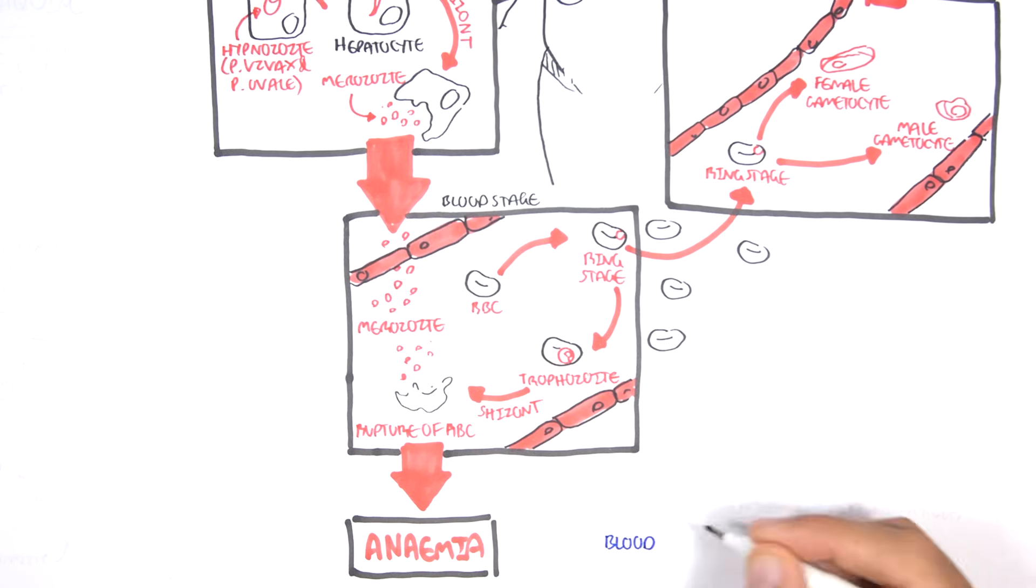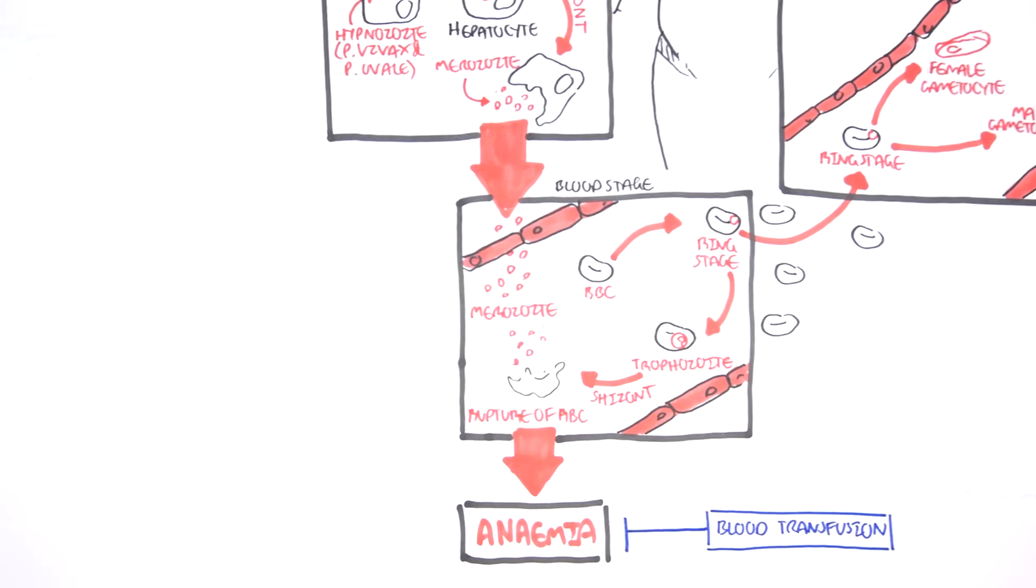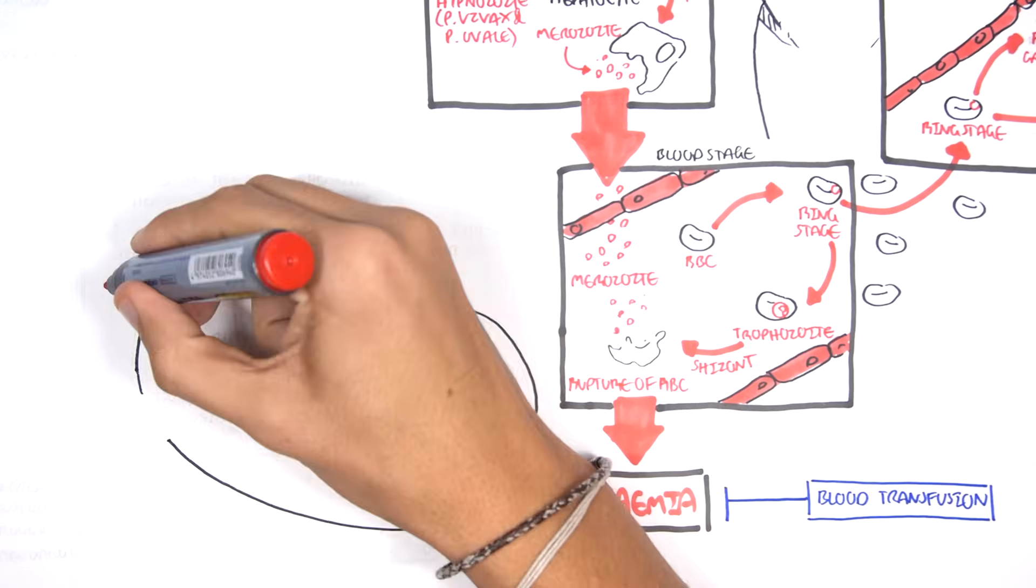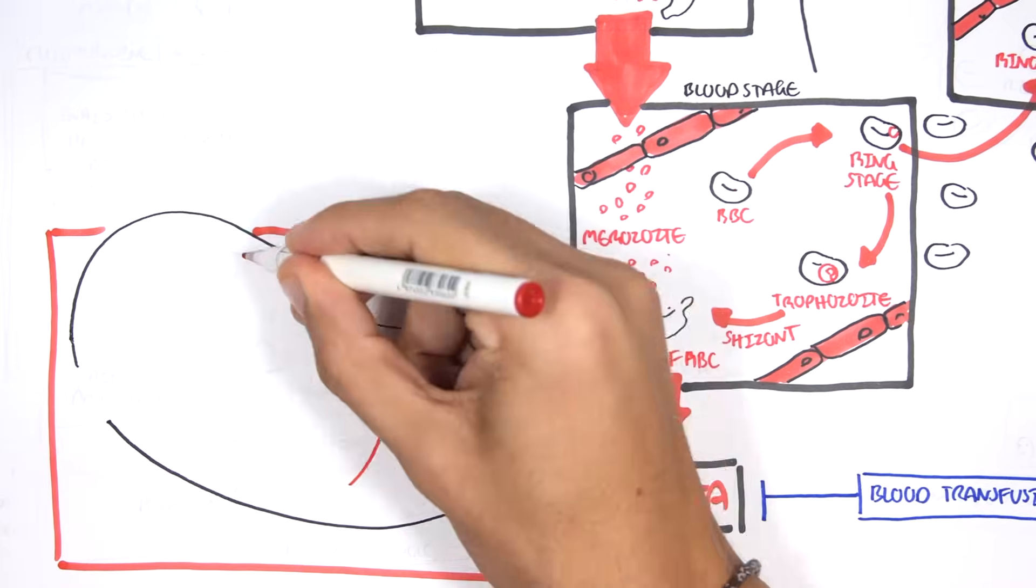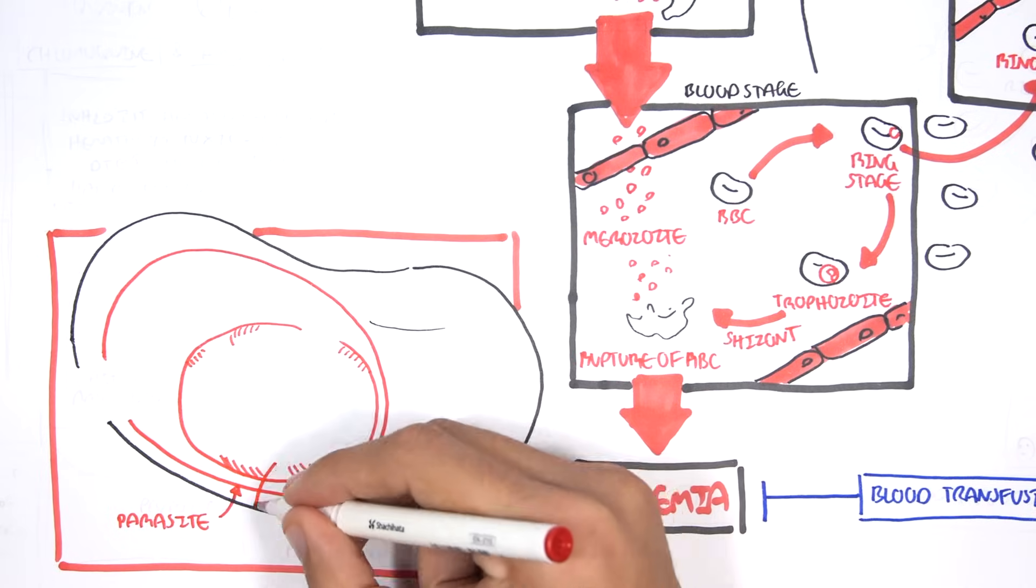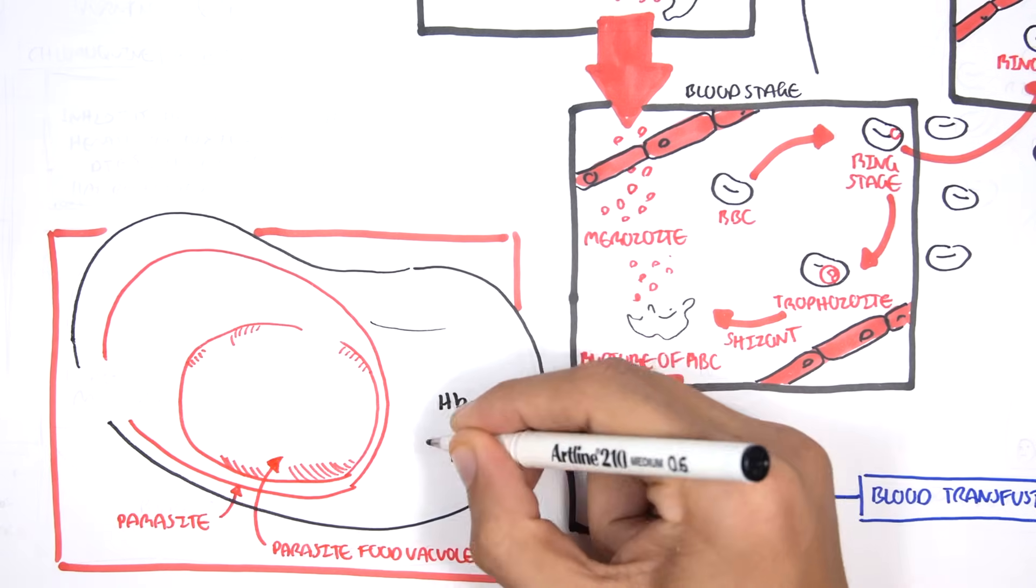For severe anemia, blood transfusion can help to replenish the loss of blood. Now let us look at the big drug class known as quinolones. To understand quinolones, we have to understand how the plasmodium parasite survives in red blood cells. Here is a red blood cell, and here is the parasite. The parasite has what is called a vacuole, which is important for basically nutrition and metabolism.